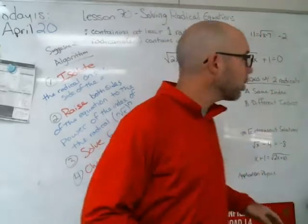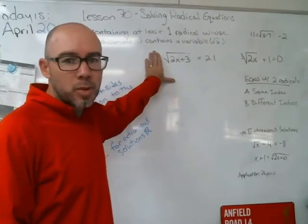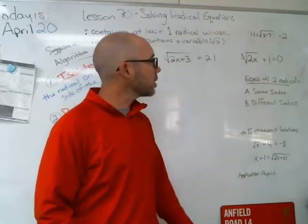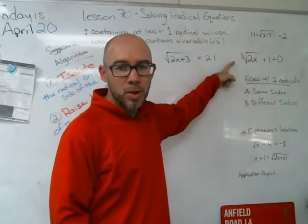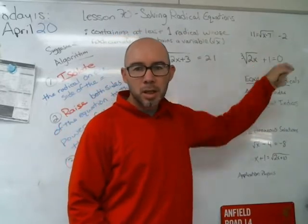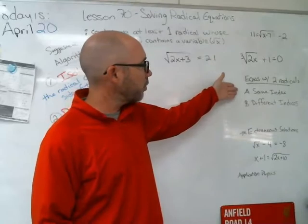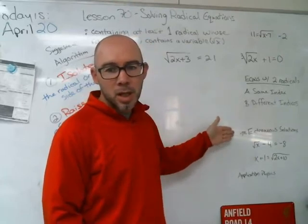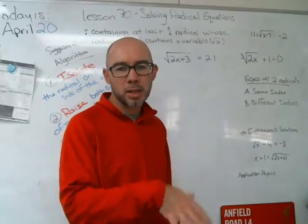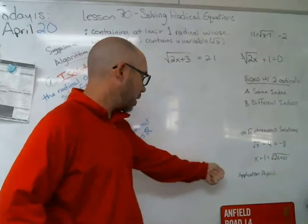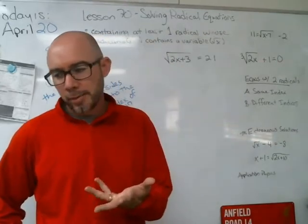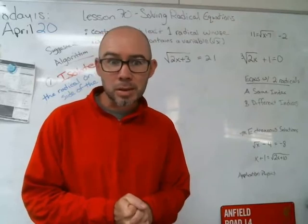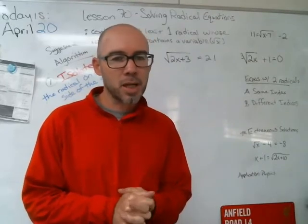The examples I'm going to run through include the square root of 2x plus 3 equals 21; 11 equals the square root of x minus 7, minus 2 outside the radical; cubed root of 2x plus 1 equals 0; equations with radicals on both sides; what to do when they're the same index or different indices; extraneous solutions; and a physics application involving pendulums and springs where you plug values under a square root sign.